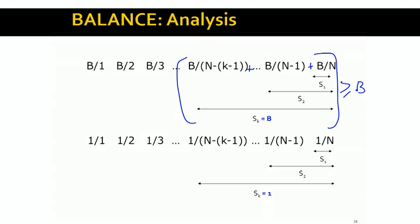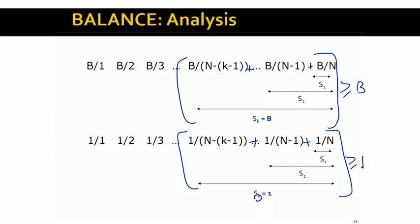To simplify, we divide by B throughout. That's equivalent to saying the allocation to the first advertiser is 1/N, the second is 1/(N-1), and so on. We want to find the smallest K such that 1/N plus 1/(N-1) and so on through 1/(N-K+1) is greater than or equal to 1.